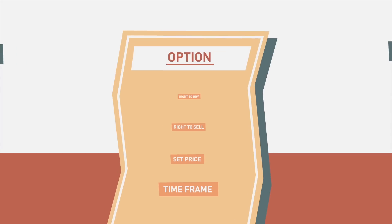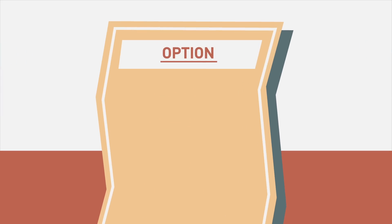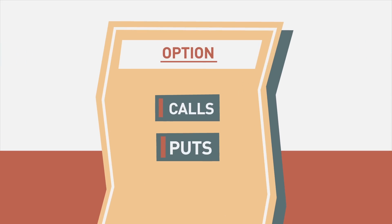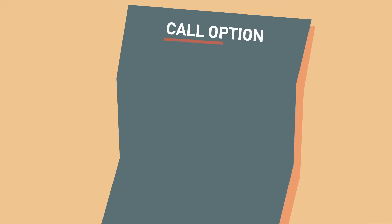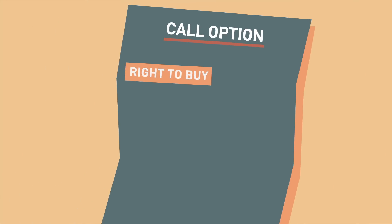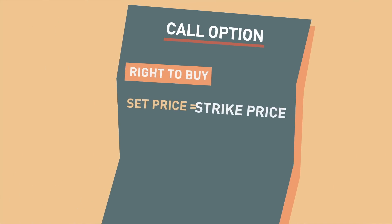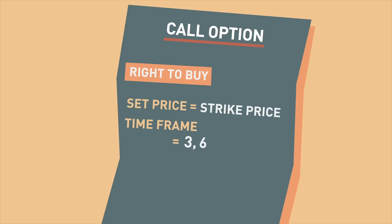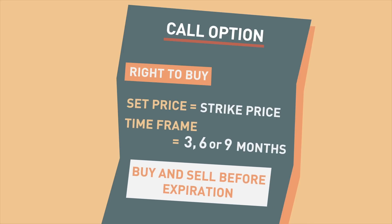Options essentially fall into two categories: calls and puts. A call option gives you the right to buy a certain number of stocks at a fixed price known as the strike price. They are typically issued with three, six, or nine month expirations and can be bought and sold at any time before expiration.